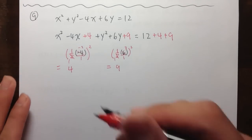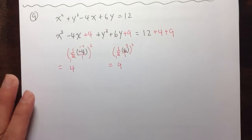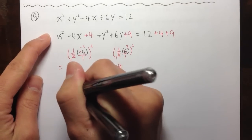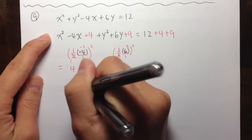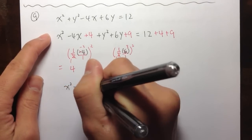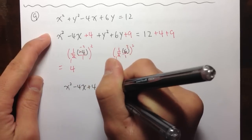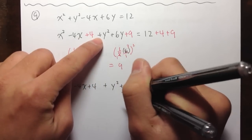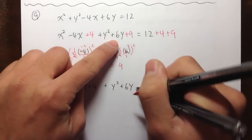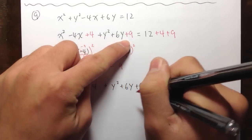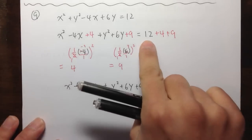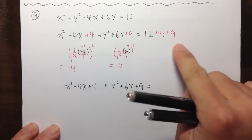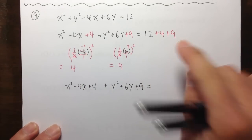Moving on — so what do we have? We have x squared minus 4x plus 4, and then plus y squared plus 6y plus 9. That's equal to 12 plus 4, which is 16, and 16 plus 9 is 25.